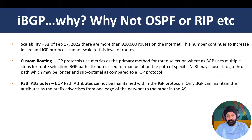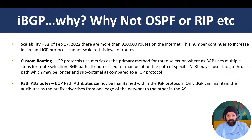IGP cannot handle a large number of routes, whereas BGP has no problem with that. BGP was made to handle large amounts of routes — as of February 17th, the number of routes on the internet is more than 910,000. iBGP can handle large route tables which IGP protocols like OSPF and RIP cannot, because they were never made for such big routing tables and will create CPU and memory resource problems.